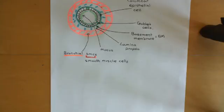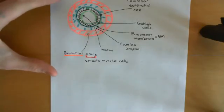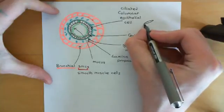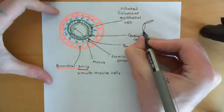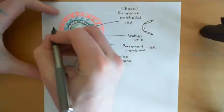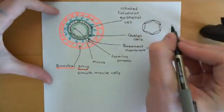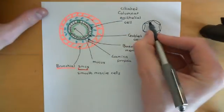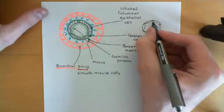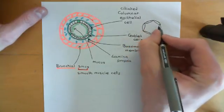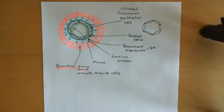The bronchial smooth muscle cells are connected in rings around the circumference of the bronchus or bronchiole. If all of these bronchial smooth muscle cells contract, they'll all decrease in length, and you can imagine that if they all decrease in length, then the circumference of this ring of bronchial smooth muscle cells decreases. If the circumference of that ring decreases, then the diameter of that ring is going to decrease — it's going to constrict. That's how contraction of the bronchial smooth muscle cells causes bronchoconstriction.